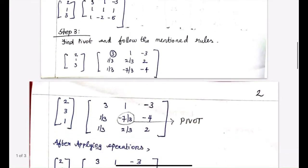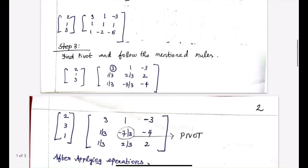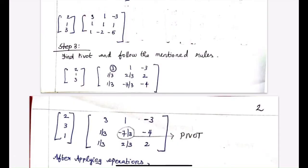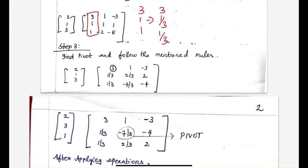Now step three is that we perform certain modifications keeping in mind certain rules. Initially we had this matrix, and after performing some modifications we can see that the lower part has changed. So let's go step by step. Initially we had 3, 1, 1. The first step is we divide all the elements below the pivot by 3. So 3, 1, 1 becomes 3, 1/3, 1/3.